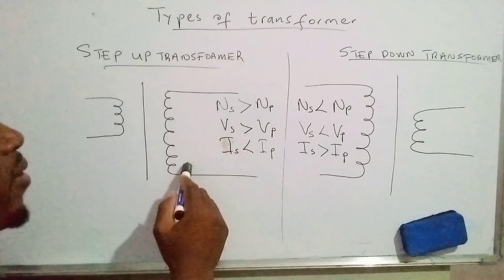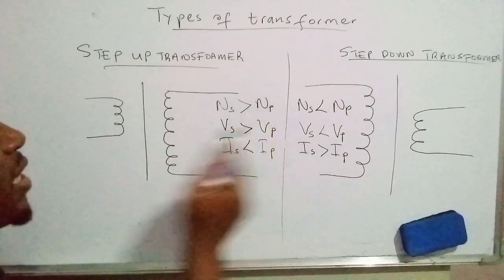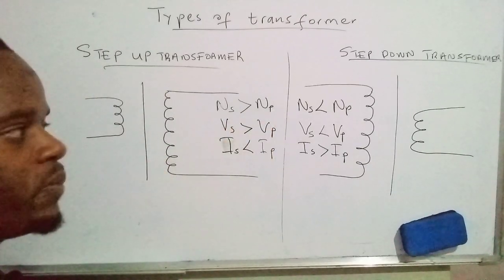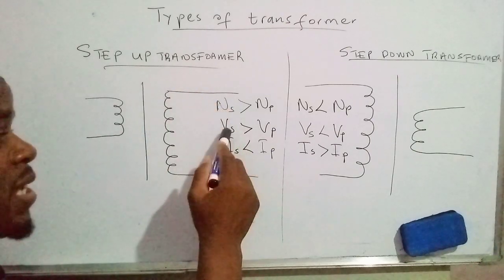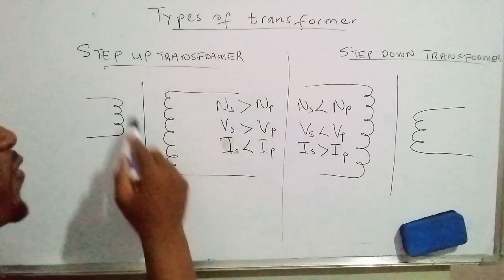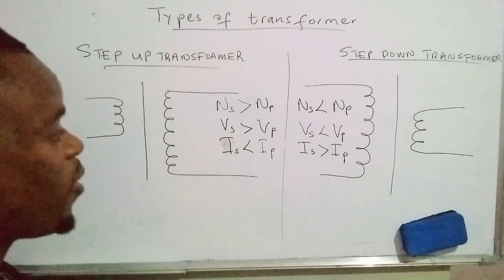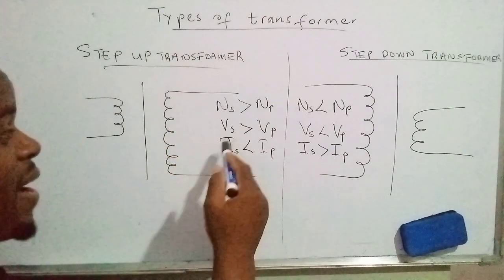say the number of turns in the secondary coil is greater than the number of turns in the primary coil. The voltage across the secondary coil is greater than the voltage across the primary coil. The current